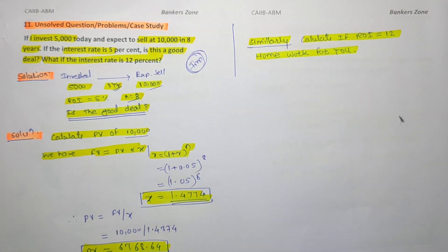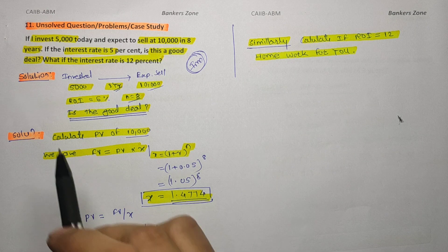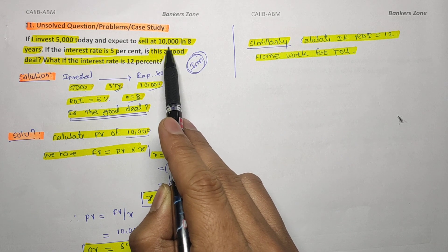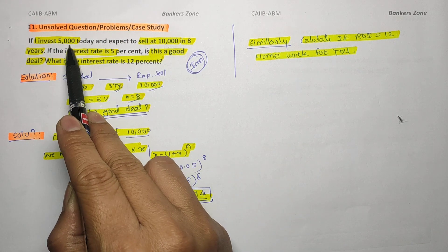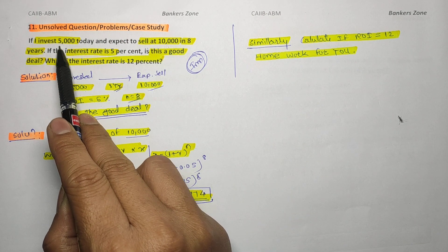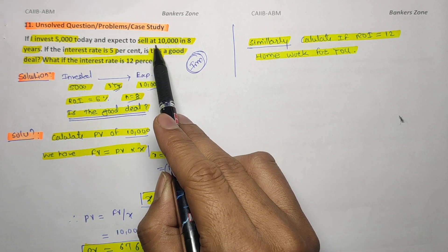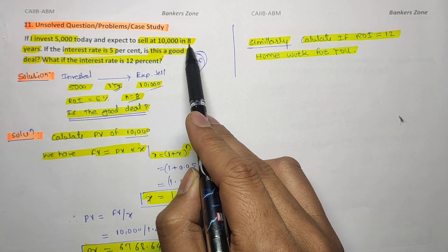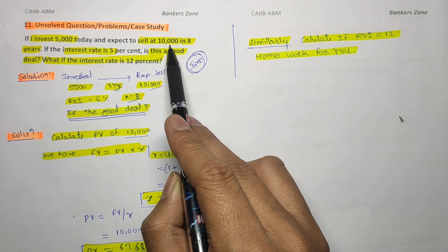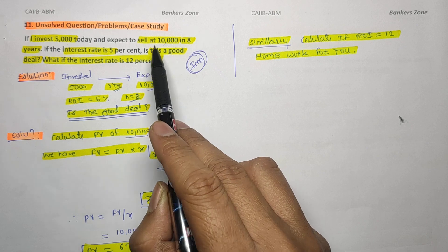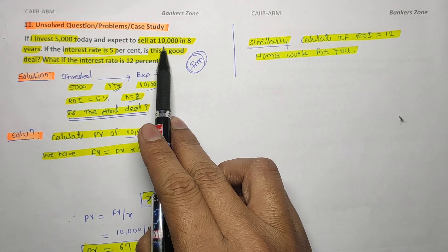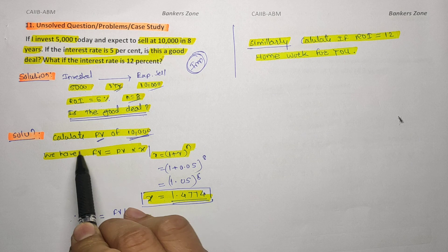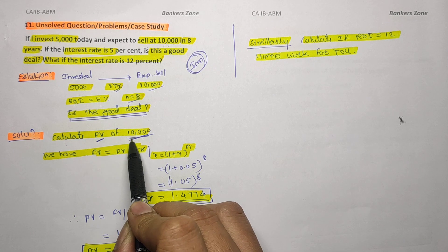This is very important because IIBF generally asks this type of numerical. Today I have invested 5000 and in the future I will get 10,000. Suppose in 2020 I invested 5000 rupees — after eight years, in 2028, I will get 10,000. But I don't know the value of 10,000 today. To compare 5000 and 10,000, we must calculate the present value of the future cash flow.